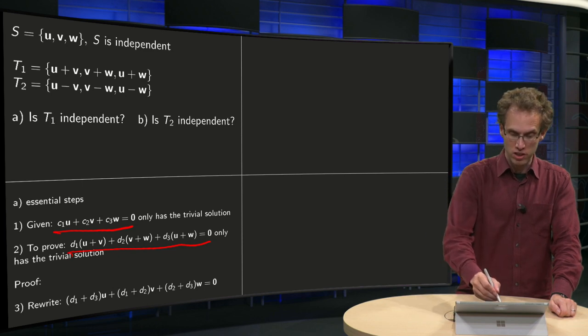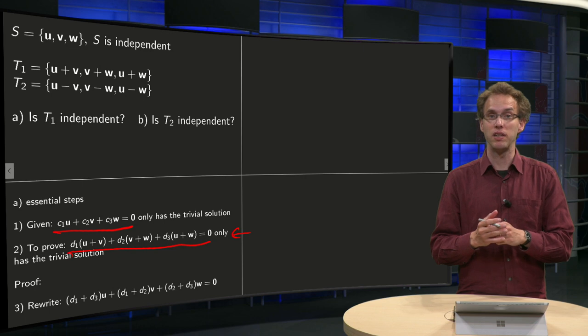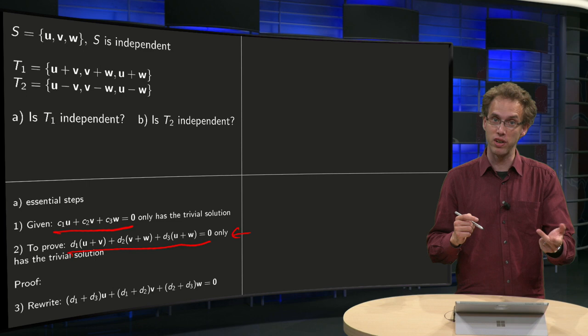So we look at this second equation over here and we rewrite that one a bit and let's see whether we have only the trivial solution d1 equals zero, d2 equals zero, d3 equals zero.